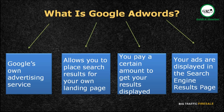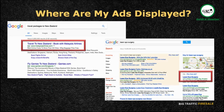Google AdWords is Google's own advertising service, which allows you to place search results for your own website or landing page. The search results for your product or service will appear on the search engine results page — the SERP — which you would have to pay a certain amount to get your results displayed. For those new to internet marketing, Google AdWords is one of the easiest and most practical ways to generate traffic to your landing page. Contrary to popular belief, the steps are actually quite simple and are not as pricey as some may perceive.